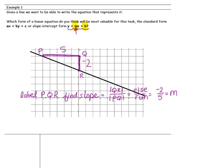Next, we want to locate or find the y-intercept. We want to see where this line crosses the y-axis. This is b, called the y-intercept. Our y-intercept is a positive 4.